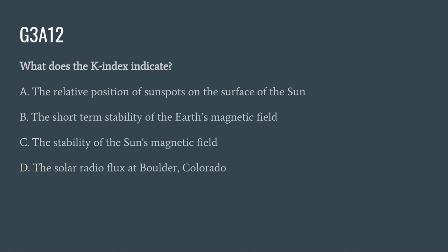G3A12: What does the K-index indicate? A. The relative position of sunspots on the surface of the Sun. B. The short-term stability of the Earth's magnetic field. C. The stability of the Sun's magnetic field. Or D. The solar flux at Boulder, Colorado. The correct answer is B: the short-term stability of the Earth's magnetic field.